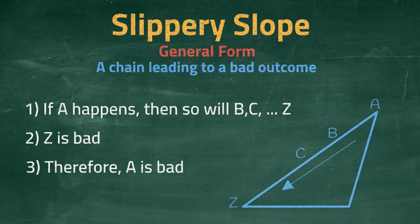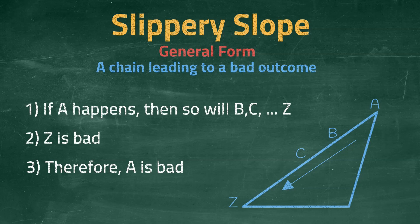In reality, these arguments tend to be about probabilities, and so we must assess the likelihood of A leading to B, B to C, and so on. The more steps there are, the more unlikely it is that the first step will ultimately lead to the last. Of course, if the first two premises are valid and correct, then the conclusion must also be correct. So not every slippery slope argument is fallacious, but more often than not, they will be.